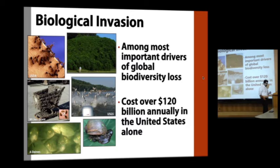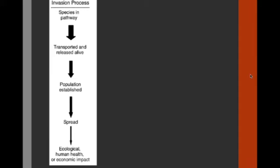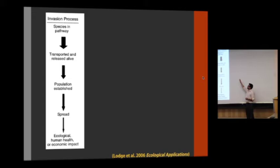It's useful to think about invasions as a process. It starts with species in their native habitat — species where they belong. Those species enter a transport pathway of some sort: either we collect them because we want to trade them, or they get taken up into a ballast tank accidentally and hitchhike across the globe. Those species are then transported and released alive someplace new, establish a self-sustaining reproductive population in the new habitat, and then spread and cause those environmental and economic impacts.